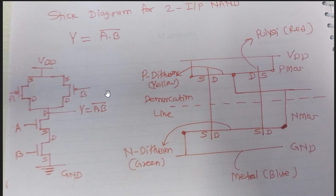Now, in order to draw the stick diagram for this two-input NAND gate, first we have to draw two lines for power supply and ground — VDD and ground.